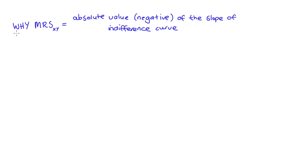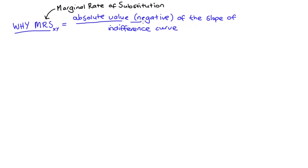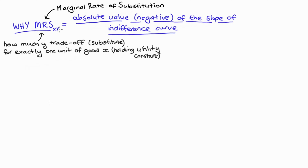Hi everyone. In this video I'm going to explain why our MRS — that's our marginal rate of substitution — is equal to the absolute value, or alternatively the negative, of the slope of our indifference curve. Our MRS subscript xy is going to tell us about the rate at which we're trading off or substituting between some good y for exactly one more unit of good x, holding utility constant.